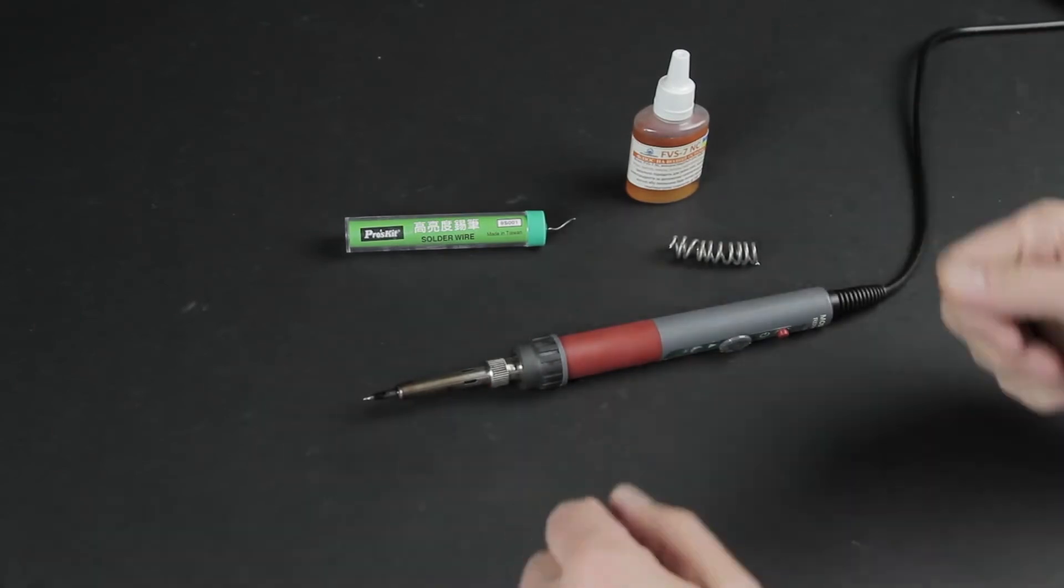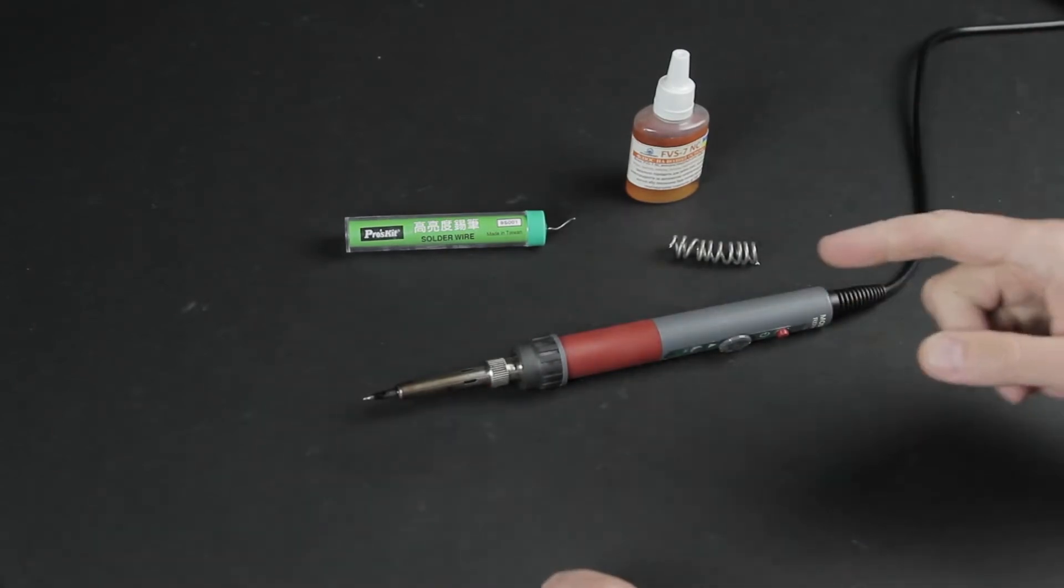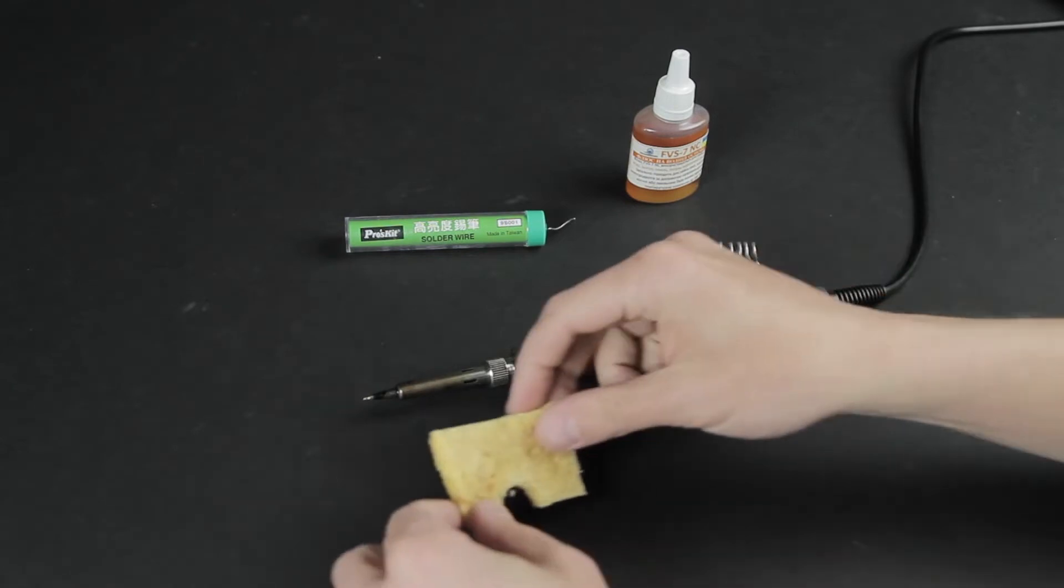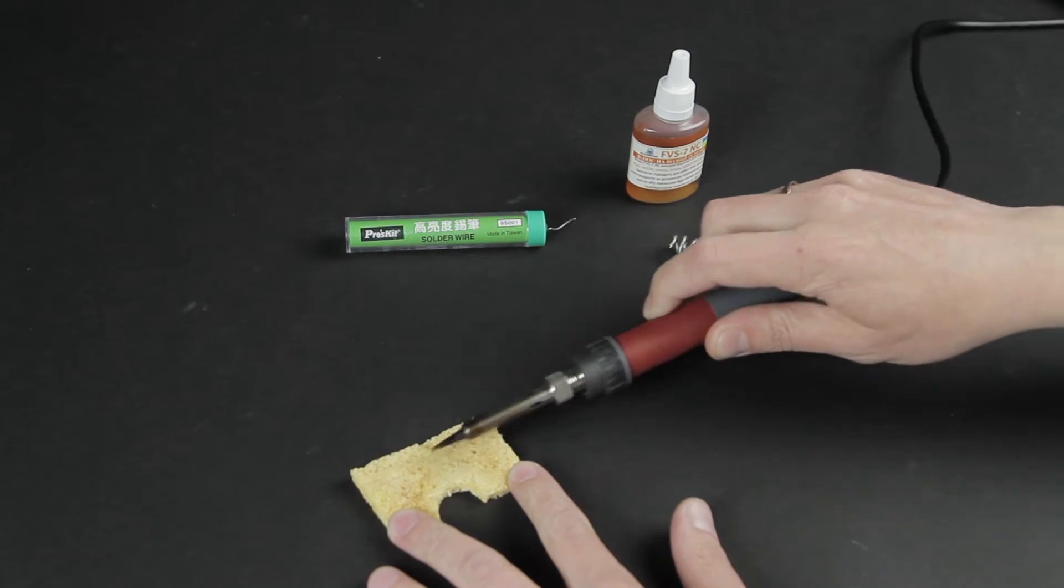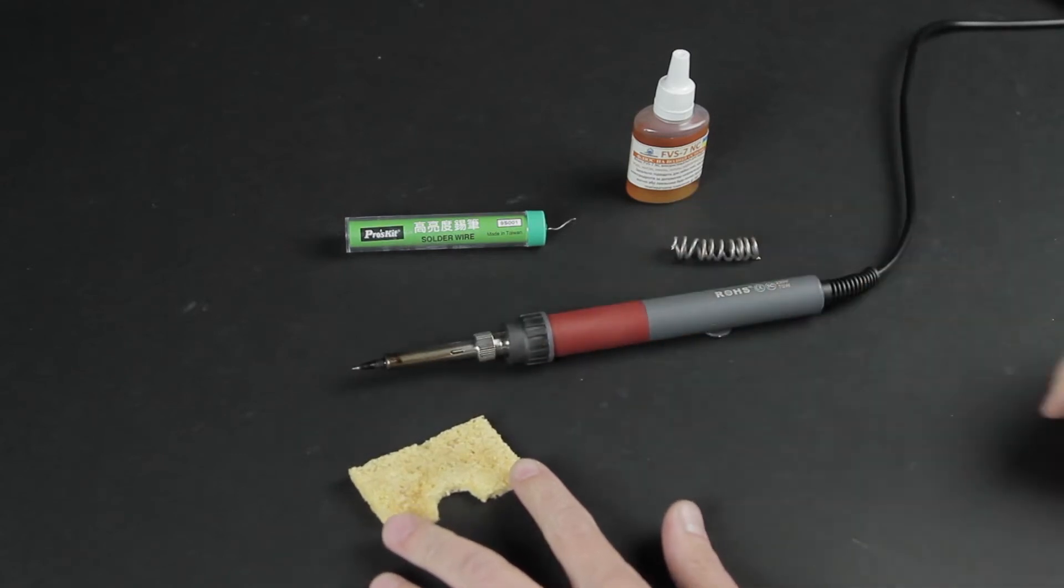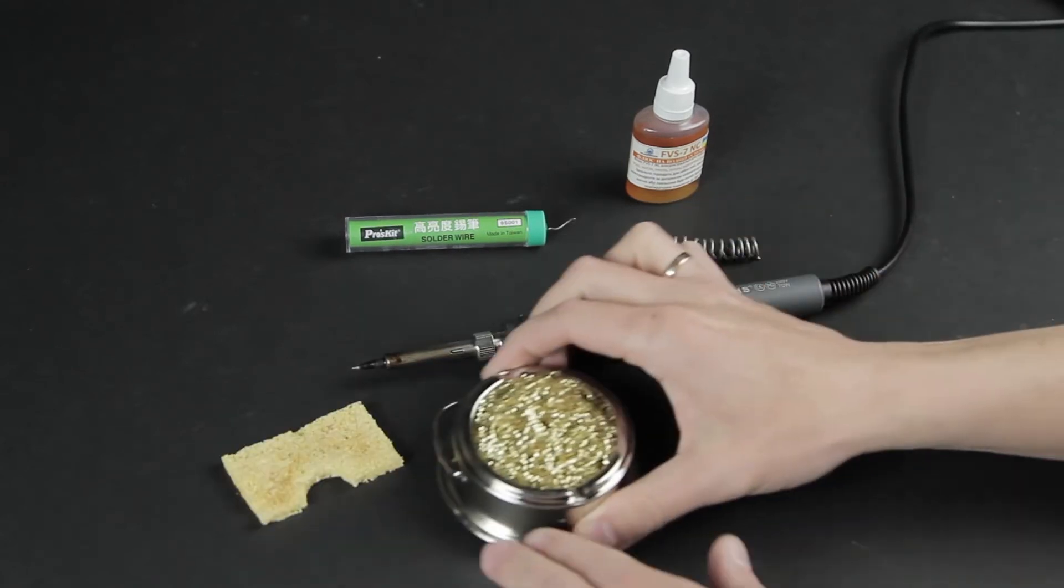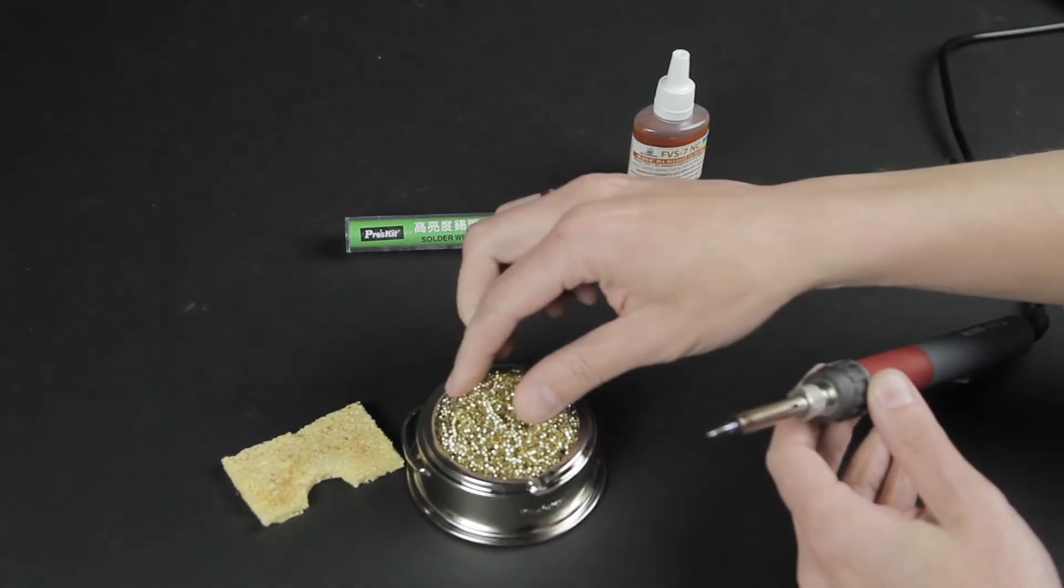So, to start soldering, you just need a soldering iron, solder, and flux. But you can also take a sponge to clean the tips. The sponge is moistened with water and cleans the tips well from solder and flux residue. Copper shavings will also do the job just fine.